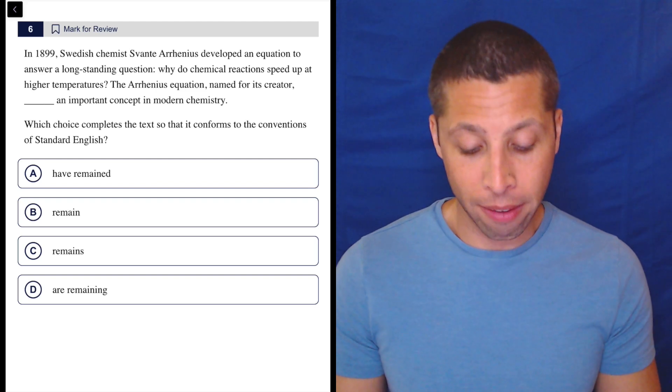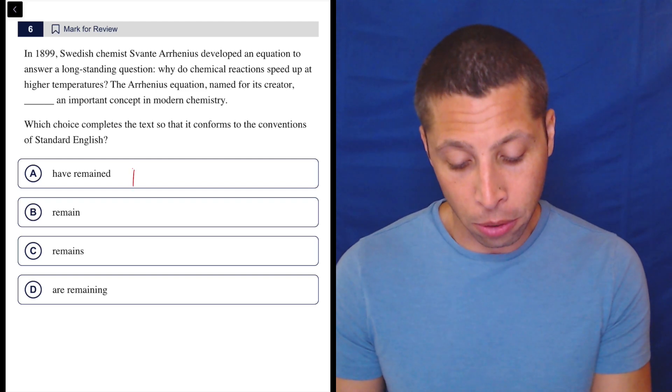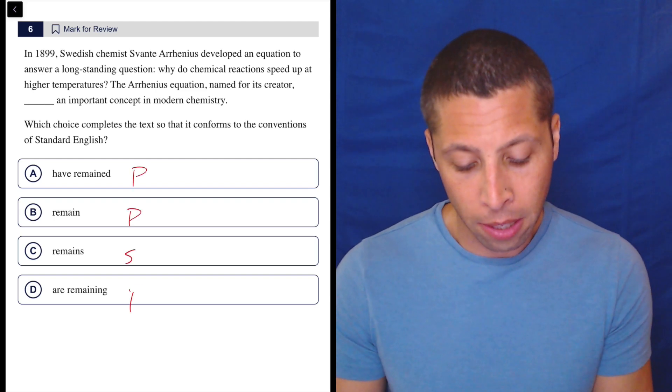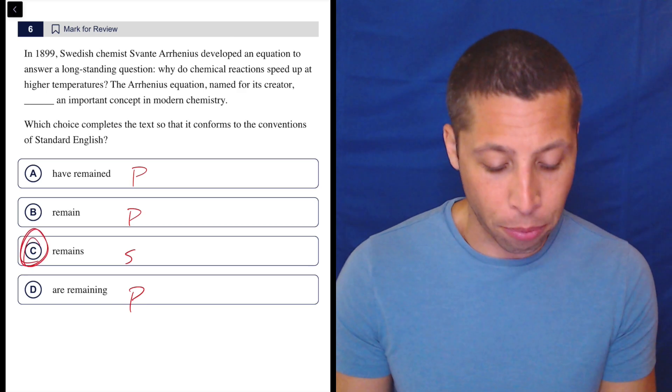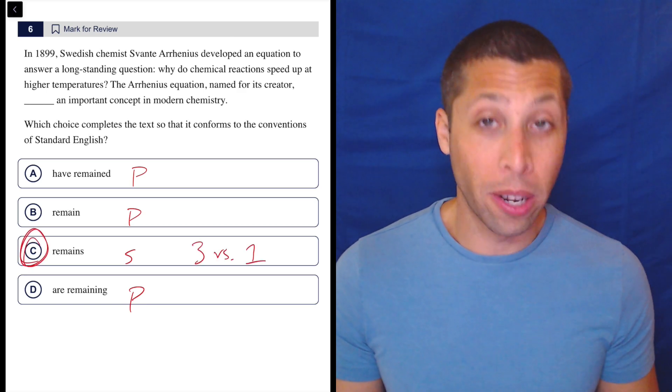Look at the choices. What do we have? Verbs. And look: plural, plural, singular, plural. I wonder what the answer is going to be? Probably C, because it's the three versus one thing and one is different.